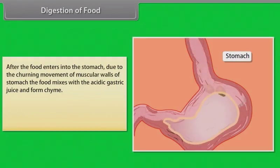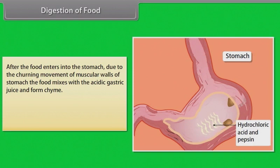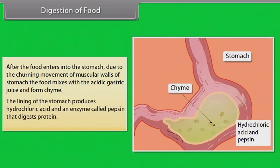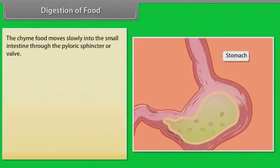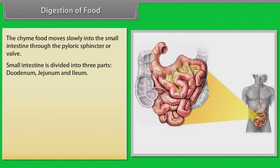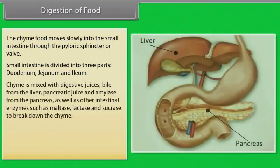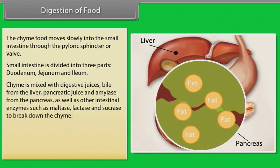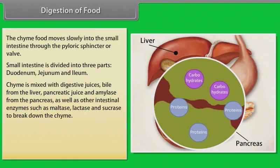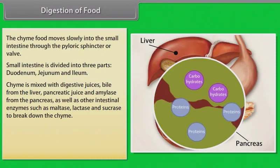After food enters the stomach, churning movements of the muscular walls mix it with acidic gastric juice to form chyme. The stomach lining produces hydrochloric acid and the enzyme pepsin, which digests protein. Chyme then moves slowly into the small intestine through the pyloric sphincter. In the small intestine — duodenum, jejunum, and ileum — chyme is mixed with bile from the liver, pancreatic juice, amylase from the pancreas, and intestinal enzymes such as maltase, lactase, and sucrase.